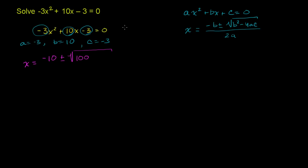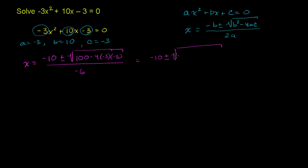Minus 4 times a times c. So minus 4 times negative 3 times negative 3, all of that under the radical sign, and all of that over 2a. 2 times a is negative 6. So this is going to be equal to negative 10 plus or minus the square root of 100 minus — negative 3 times negative 3 is positive 9, and positive 9 times 4 is positive 36. We have a minus sign out here, so minus 36, all of that over negative 6. This is equal to 100 minus 36, which is 64.